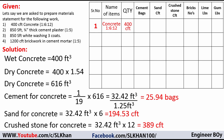We enter all these values into the material statement: cement is 25.94 bags, sand is 194.53 CFT, and crushed stone is 389 CFT. There is no brick, no lime, and no gum in concrete work. Moving to serial number two — the plaster work at ratio 1:5 — the quantity is 850 SFT, taken in square feet.